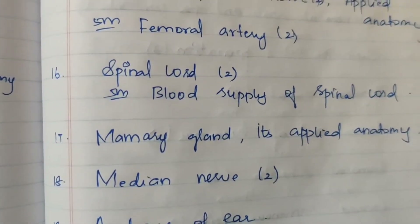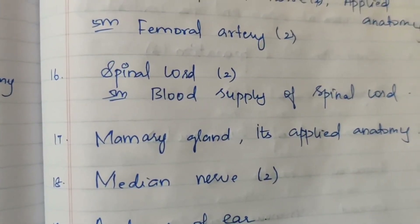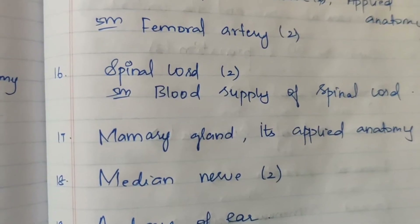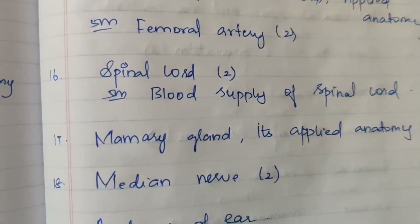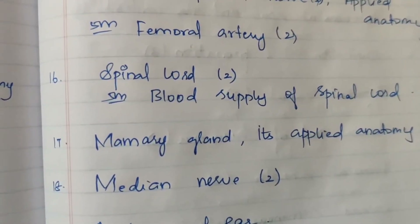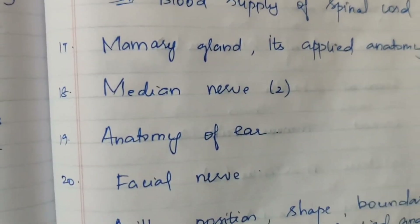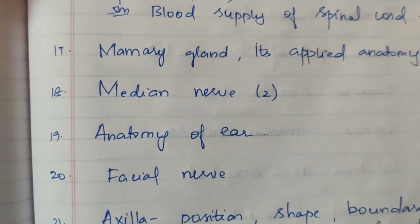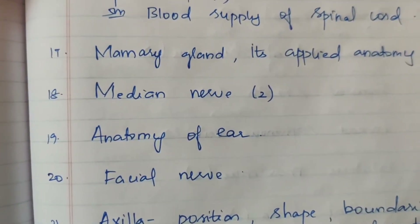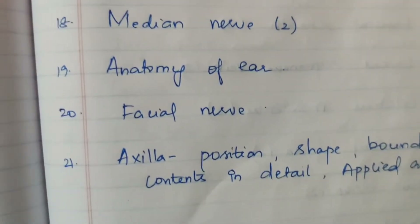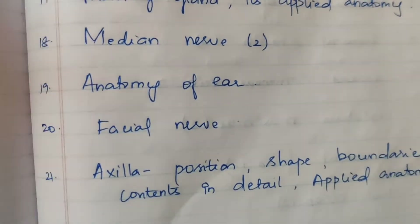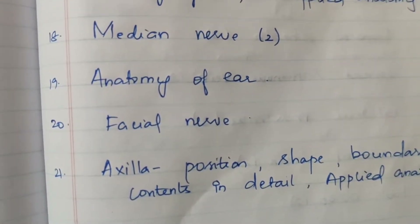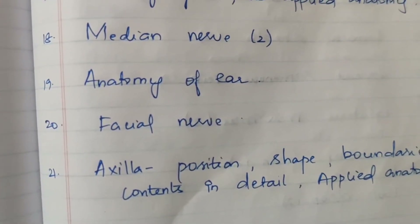Sixteenth question: spinal cord — asked 2 times, and five marks asked 2 times. Blood supply of spinal cord is mentioned. Seventeenth question: mammary gland and its applied anatomy — asked one time. Eighteenth question: median nerve — one 15-mark, one 5-mark — asked 2 times total.